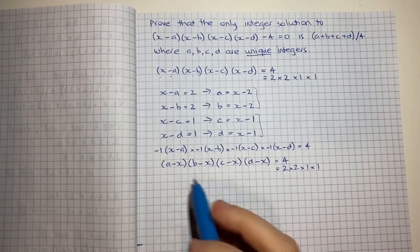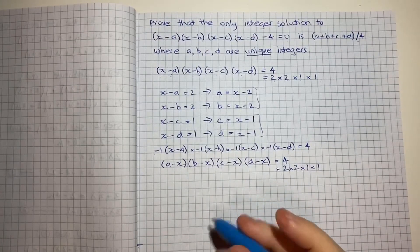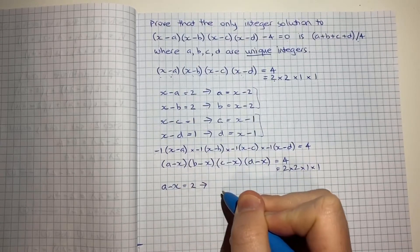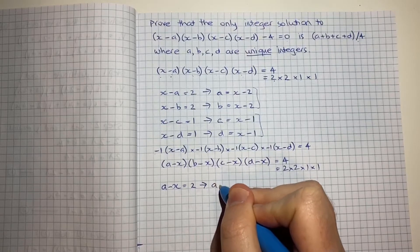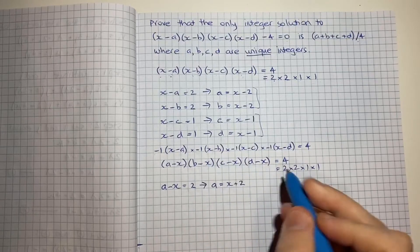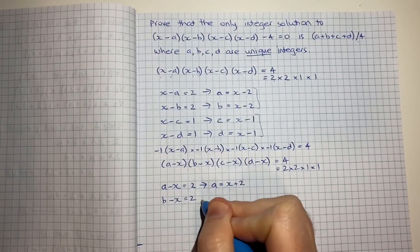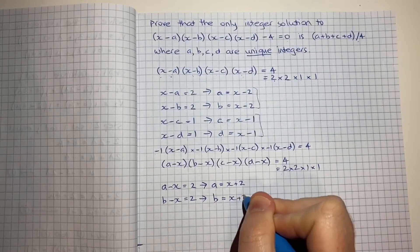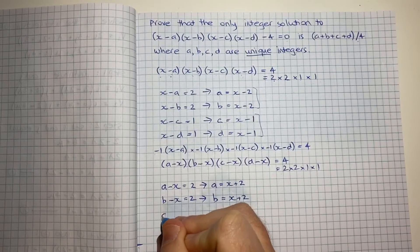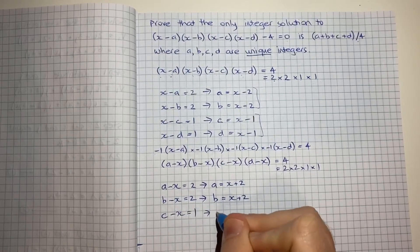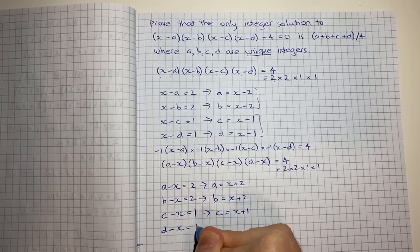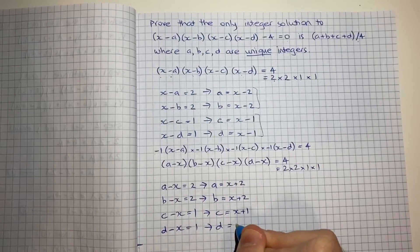And now here we can do the same thing with this matching. So I'll say a-x = 2, therefore a = x+2. Same thing here, b-x = 2, therefore b = x+2. C-x = 1, therefore c = x+1, and finally d-x = 1, therefore d = x+1.